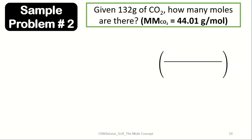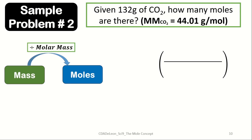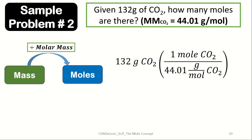Sample problem 2: Given 132 grams of carbon dioxide, how many moles are present? The molar mass of CO₂ is 44.01 g/mol. We convert mass to moles by dividing by the molar mass: 132 g CO₂ × (1 mol CO₂ / 44.01 g). The grams cancel, leaving moles as our unit. 132 ÷ 44.01 gives us 3.3 moles of carbon dioxide.